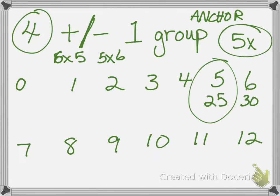Now what about subtracting? If you can't remember five times four or four times five, you know five times five — so let's subtract a group. What's 25 take away five? Twenty. So you can figure those out super easily.